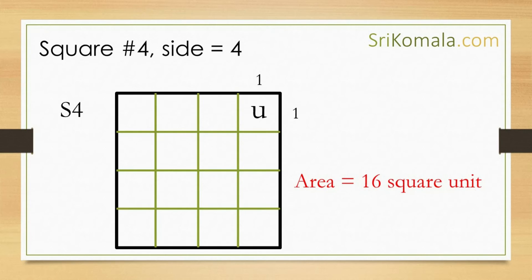Fourthly, let us see square number 4, whose sides are 4 unit length, as shown in the diagram. Then, as can be understood from the diagram, by counting the number of unit squares inside square number 4, therefore the area of square number 4 is 16 unit squares.